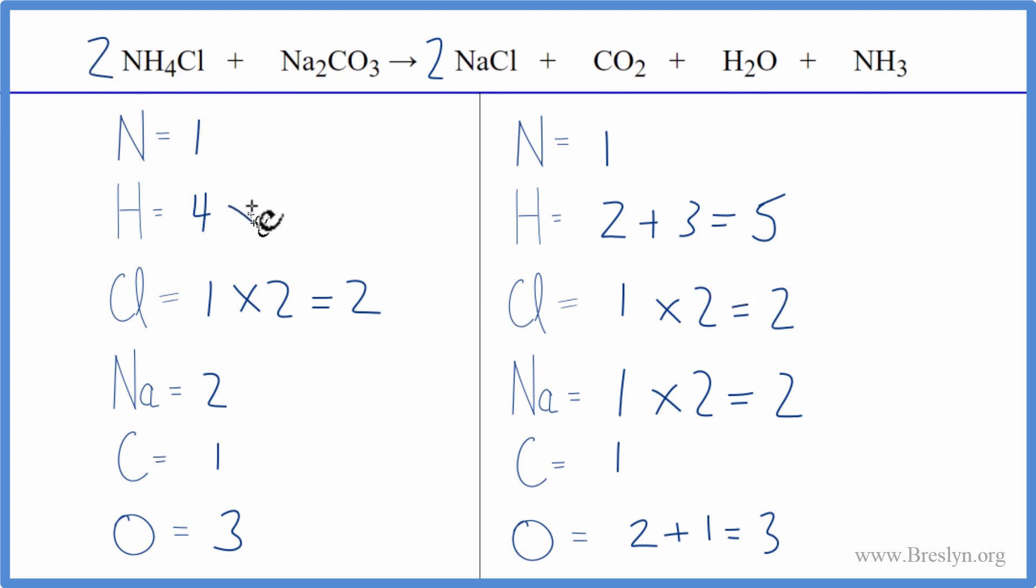Four times two, that'll give us eight hydrogens. And one times two, that'll give us two nitrogens. Let's do the nitrogens next. We have two here and one here. We'll put a two in front of the NH3. One times two, that'll give us two nitrogens. Those are balanced.